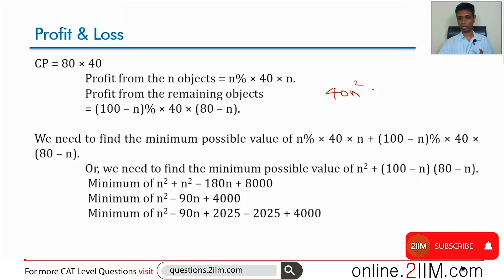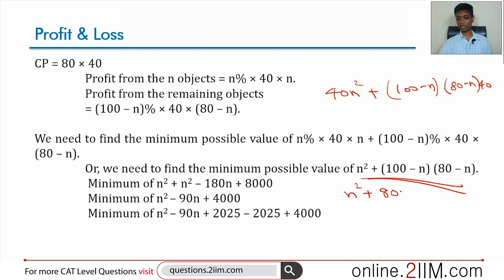40 times n square plus 100 minus n into 80 minus n into 40. The 40 can be factored out. We're looking at minimum of n square plus 100 minus n into 80 minus n. Let's expand this: n square plus 100 into 80, which is 8000, plus n square.